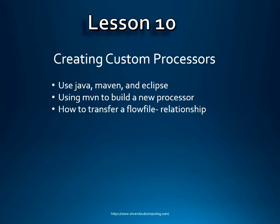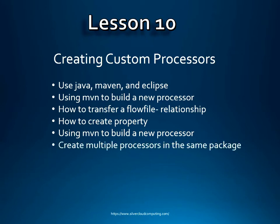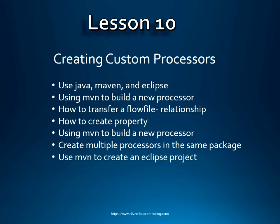We'll use Maven to build a new processor. I'll show you how to transfer a flow file and set up different relationships based on certain criteria - things like pass and fail. We'll show you how to define those, how to create a property (some processors have properties like the GetFile processor where you define the directory). We'll use Maven to build a new processor, create another processor in the same package, and I'll show you how to create an Eclipse project from a Maven project.